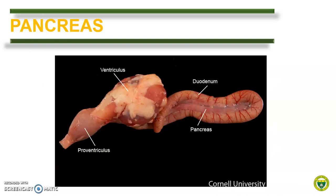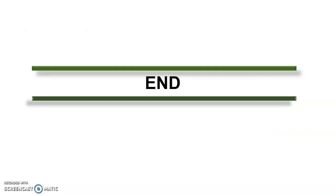In birds, the pancreas lies between the ascending and the descending duodenum, or the duodenal loop. The ascending duodenum contains openings for the pancreatic ducts, which is three in gallinaceous birds like chicken, and usually two to three in Anseriformes like ducks. And that ends our module on the digestive system.